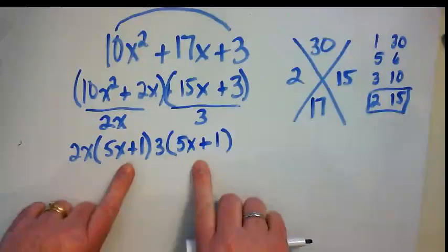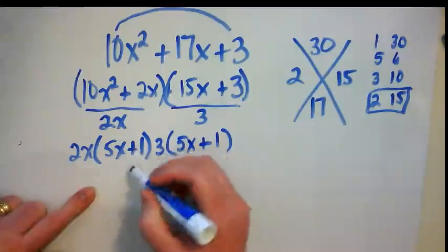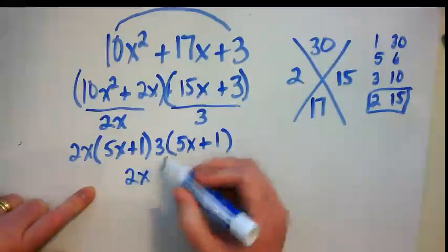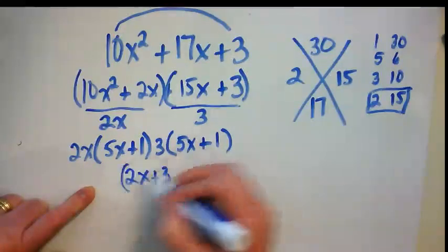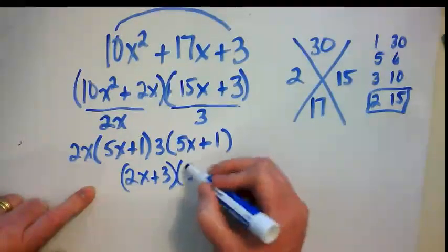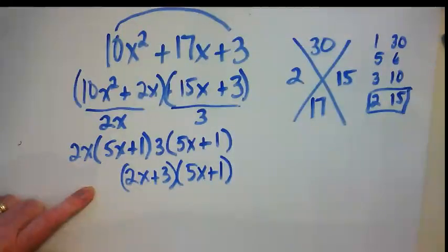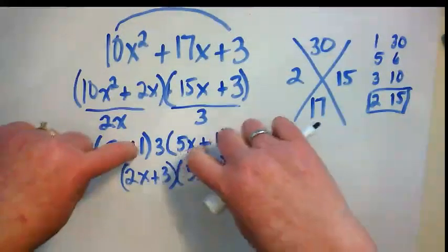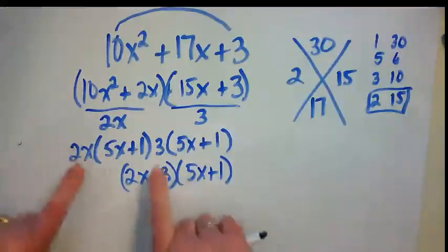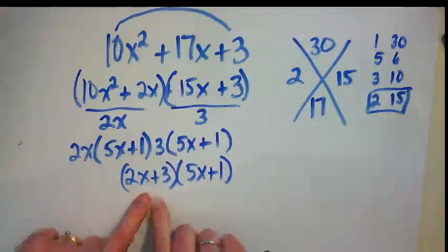And if you notice, again in my parentheses, 5x plus 1 is the same thing. So we're almost finished here. 2x plus 3 times 5x plus 1. I got this from these two because they are the same thing. And I took these and made the other pair.